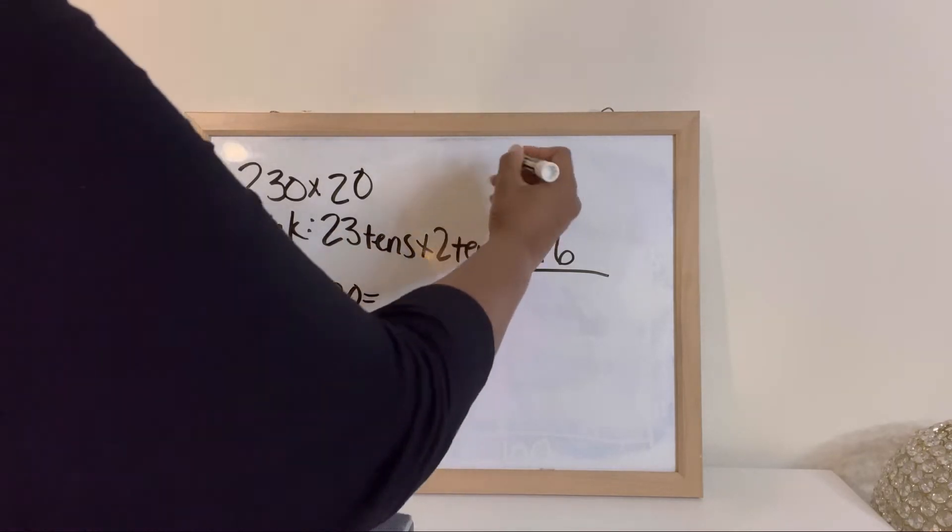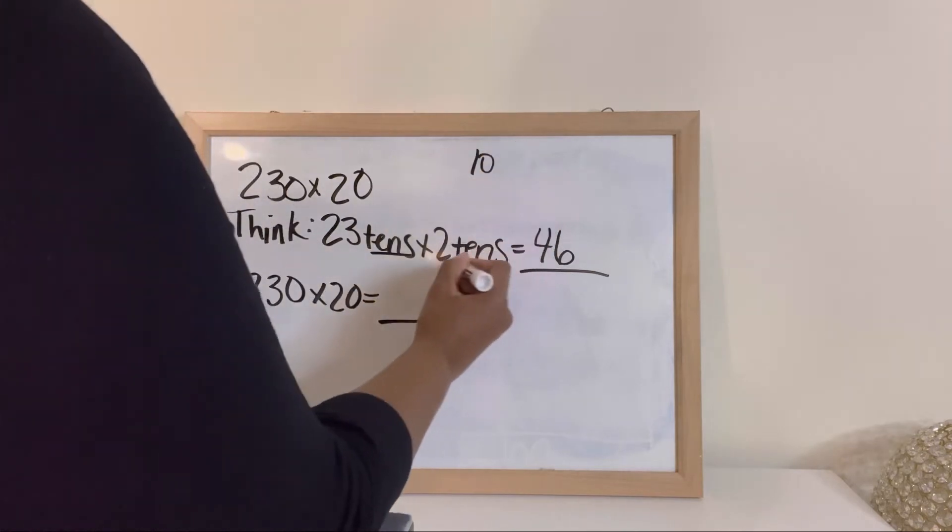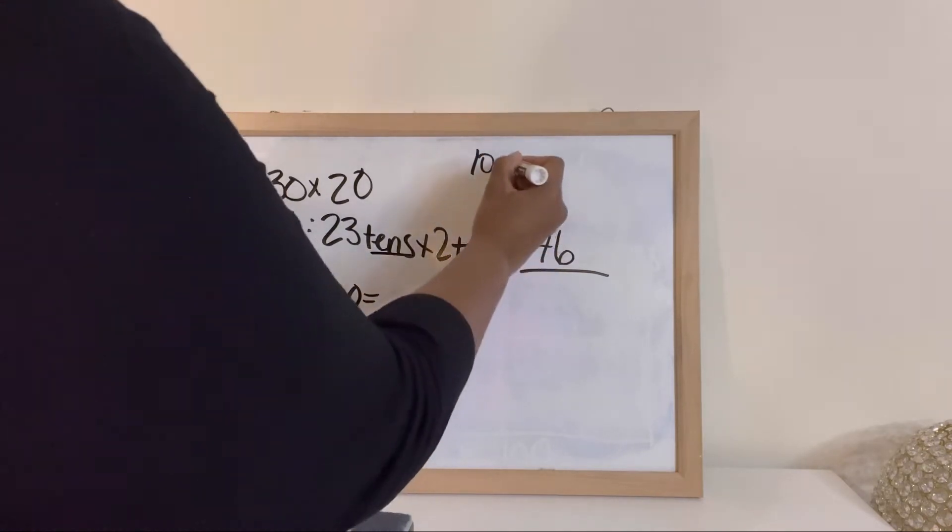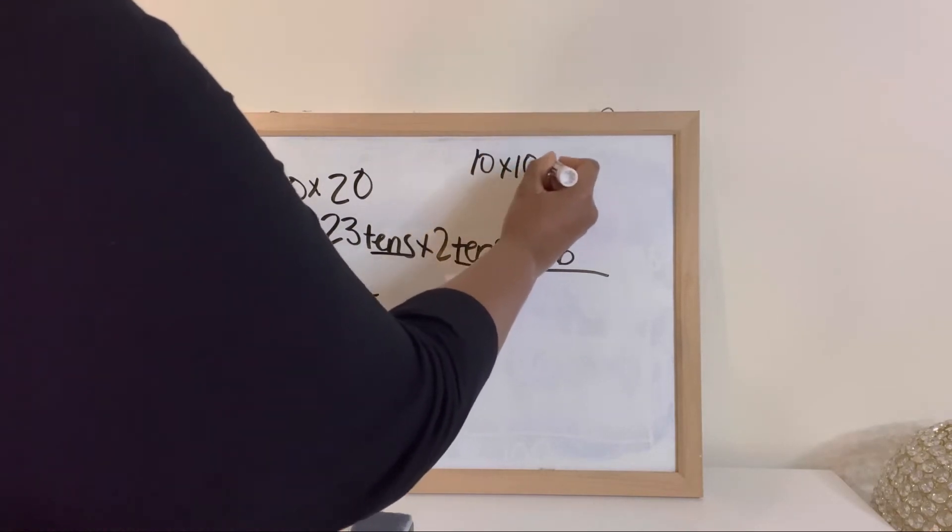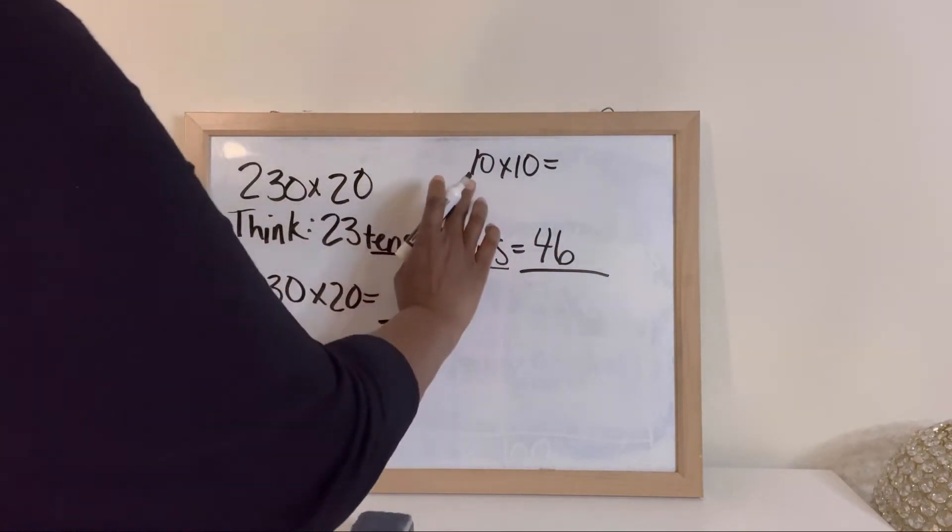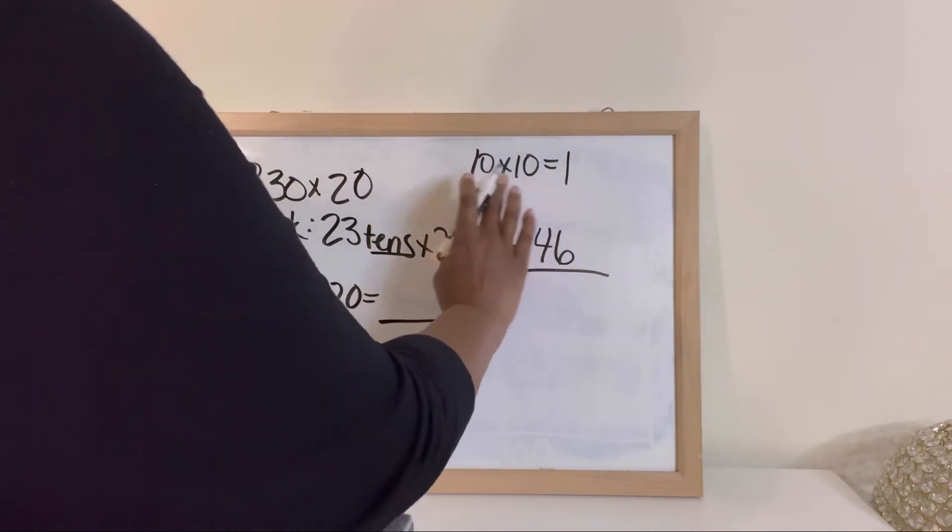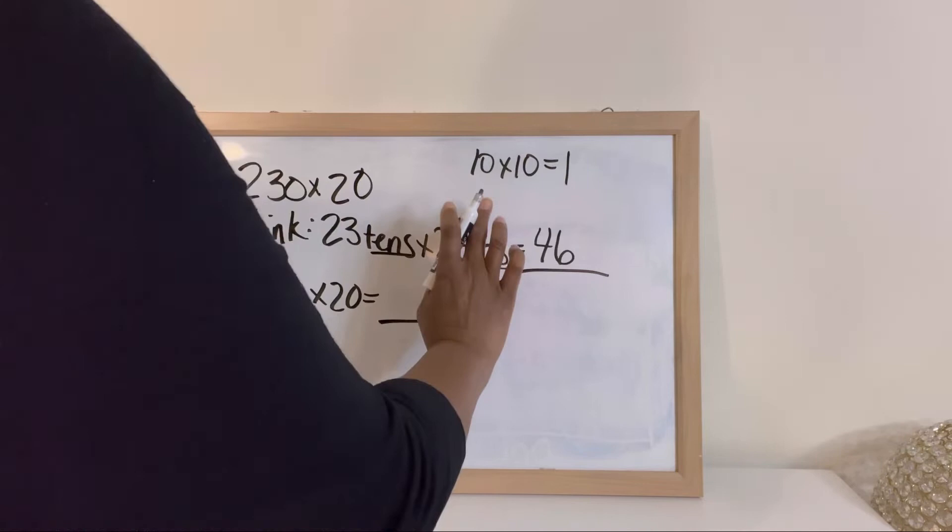So I have 10 tens here times 10s here. You have a 10 times a 10. What do you get? So you'll do 1 times 1 is 1, and then you'll count the number of zeros in your factors and add that to your answer.